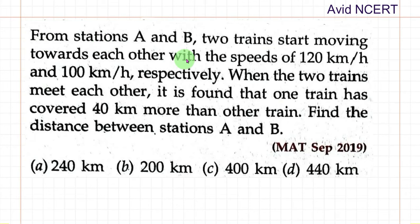From stations A and B, two trains start moving towards each other with the speed of 120 km per hour and 100 km per hour respectively. When the two trains meet each other, it is found that one train has covered 40 km more than the other train. Find the distance between stations A and B.